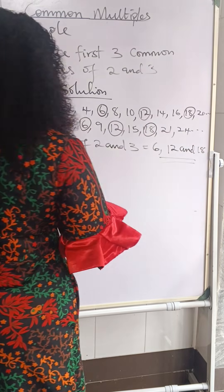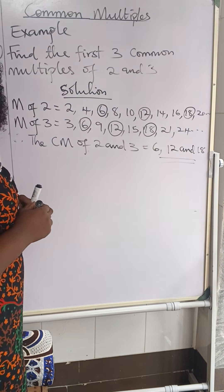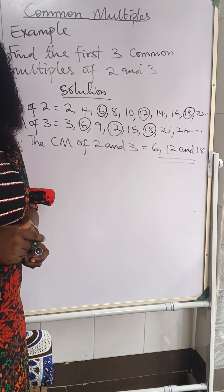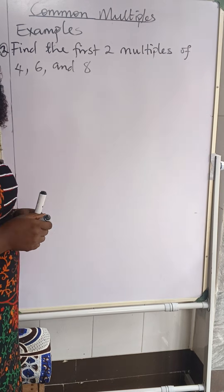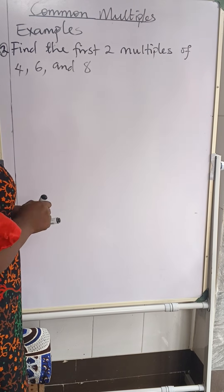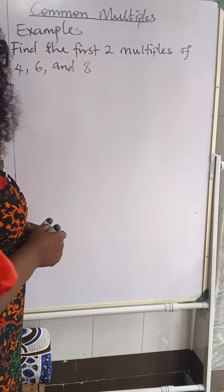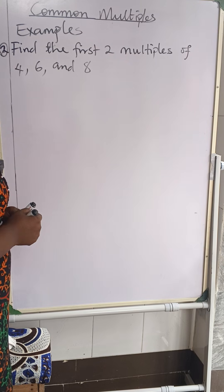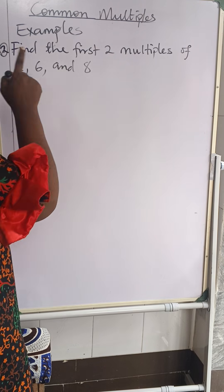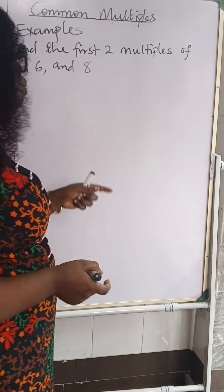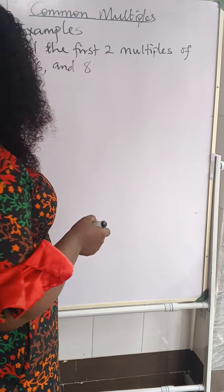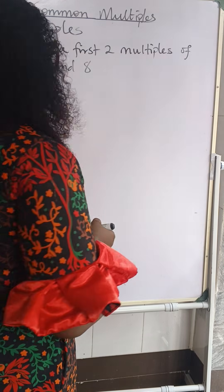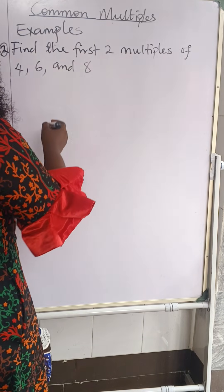These are the common multiples of two and three. Let's look at another one — Example 2. Find the first two common multiples of four, six, and eight.